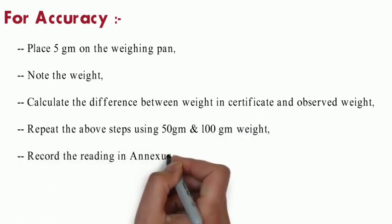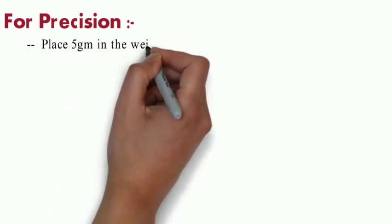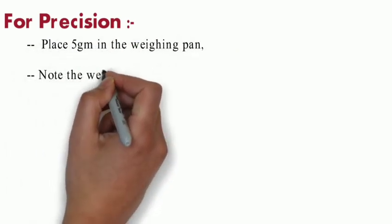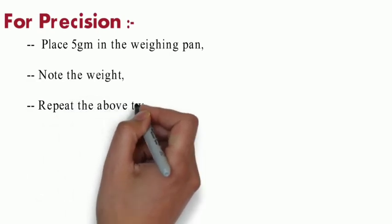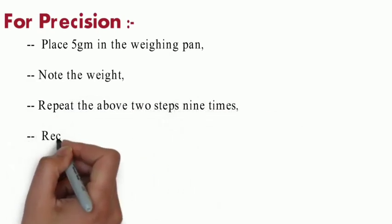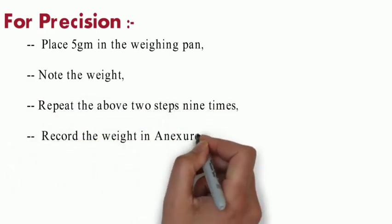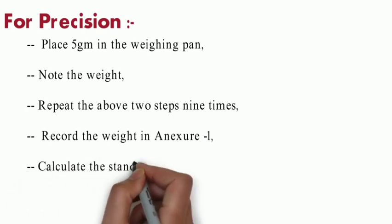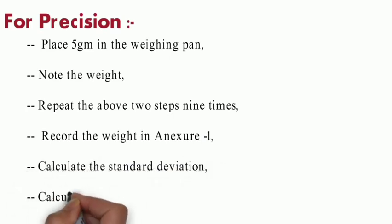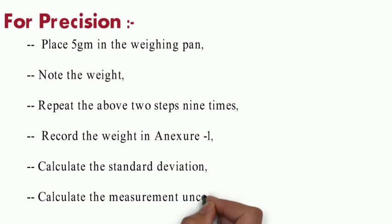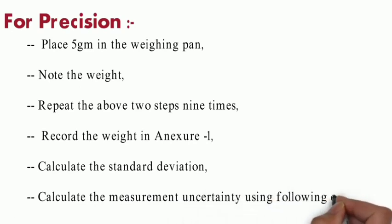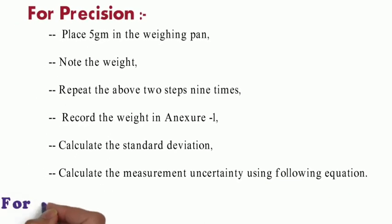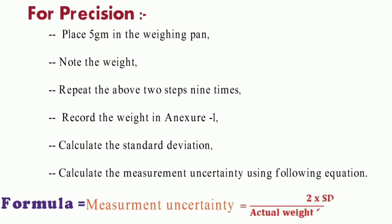For precision, place 5 grams in weighing pan, note the weight, repeat the above two steps nine times. Record weight in Annexure 1 and calculate the standard deviation. Calculate the measurement uncertainty using the following equation. Its formula is 2 into standard deviation divided by actual weight from certificate.